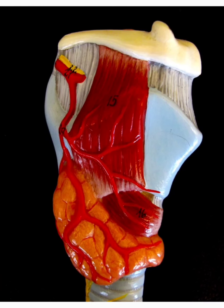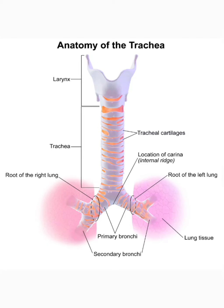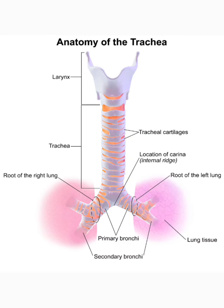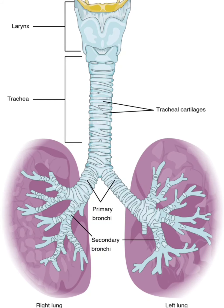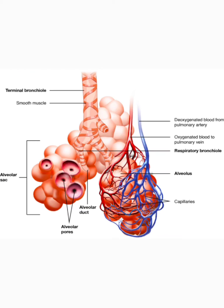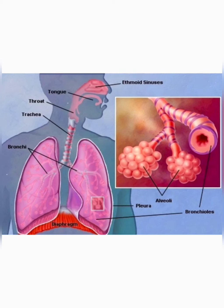The larynx continues as the trachea, commonly called the windpipe. The trachea is supported by C-shaped cartilaginous rings which help in preventing the trachea from closing and collapsing. The trachea divides into bronchi, which divide into smaller and smaller branches called bronchioles. These bronchioles end up in clusters of air sacs called alveoli, where the exchange of gases takes place. The interior of the lung is divided into millions of small chambers called alveoli, which increase the surface area of the lung. If all the alveoli were spread out, they would cover an area of nearly 160 square meters.